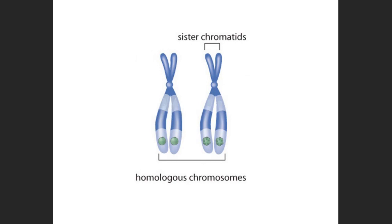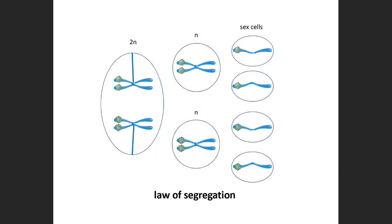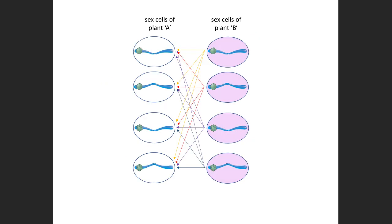So this is what Mendel referred to as the law of segregation. The homologous pairs would separate, meaning each allele would end up with its own sex cell. Now any one of these sex cells from plant A could be fertilized by any combination of ways with the sex cells from plant B.